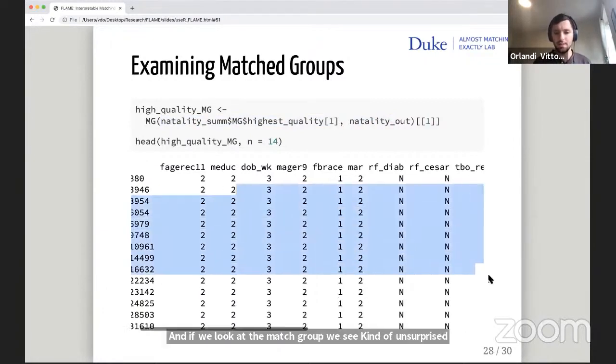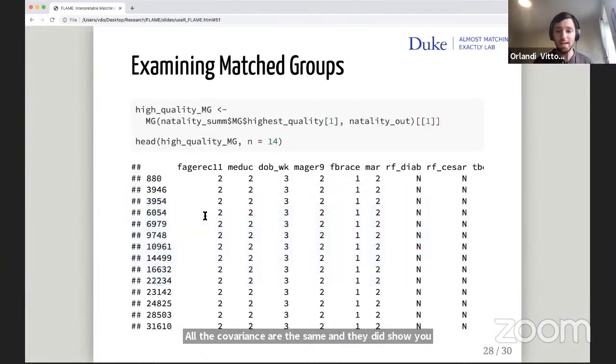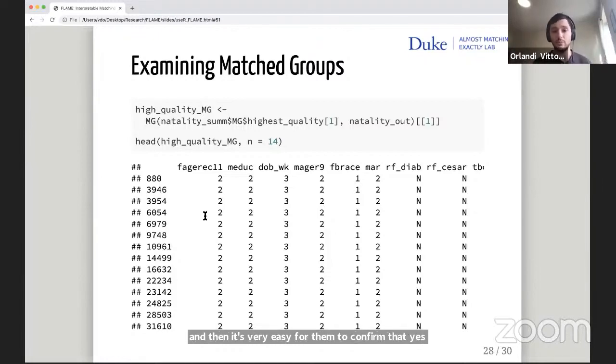So we can visualize one of these using the MG function, which takes at minimum two arguments, the unit whose match group you want, which I'm here taking from the summary object, and then just the object of class AME. If we look at the match group, we see unsurprisingly that everything is the same. All the covariates are the same. I did show you that lots of the units matched exactly. This may be a little underwhelming, but other matching methods don't guarantee that you match units that are similar in their covariate values. That's what makes this method interpretable. It's really important because the fact that we are grouping these units together is the basis for our estimating a treatment effect. You can show match groups to a domain expert, and it's very easy for them to confirm that yes, these units really are similar in meaningful ways.